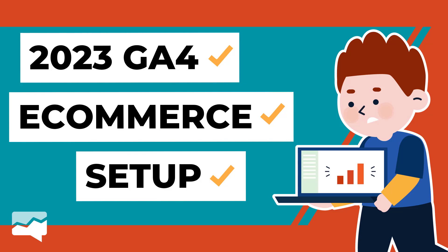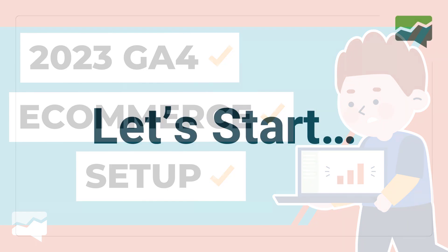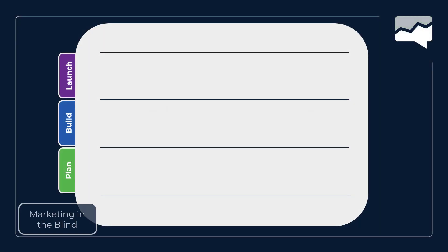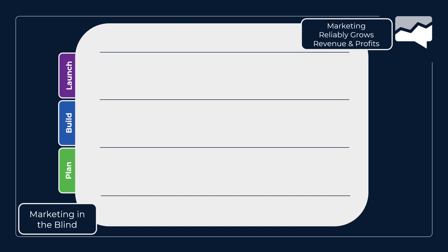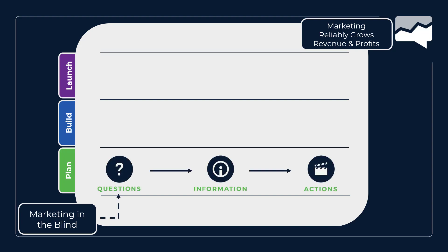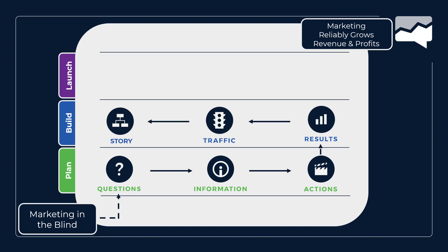Let's talk about setting up Google Analytics for e-commerce. We're doing this because we're trying to get our measurement plans working. We have a strategy for that: plan, build, launch. We don't like working in the blind — we want revenue and profits to be the goal. We do that by asking the right questions, gathering information like e-commerce data, and knowing what we're going to do with it. When you build, make sure results are recorded like e-commerce purchases, traffic is identified, and there's a story connecting the traffic to the results.